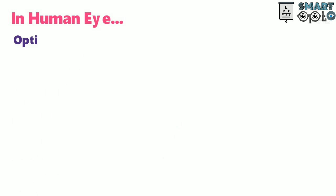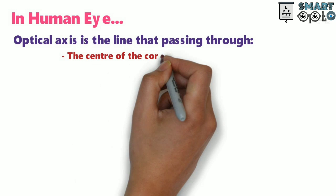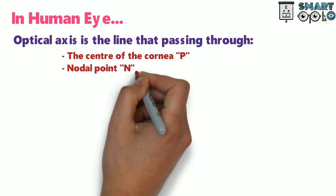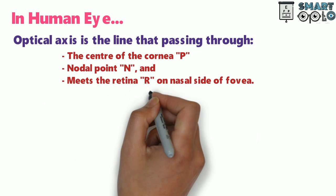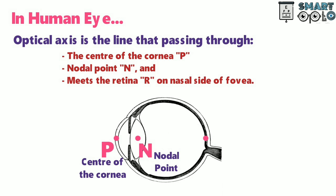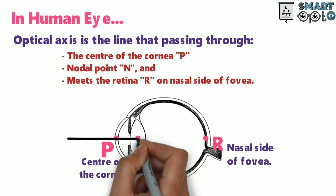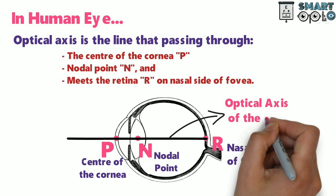In the human eye, the optical axis is the line that passes through the center of cornea, represented by P, the nodal point N, and meets the retina R on the nasal side of the fovea. This dot represents the center of cornea P, this dot represents the nodal point N, and this is the nasal side of the fovea R. The final line which passes from all three points is known as the optical axis of the eye.